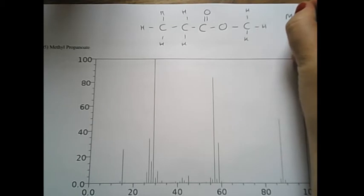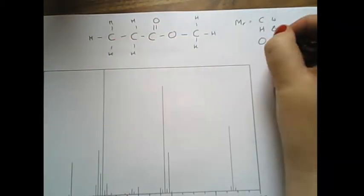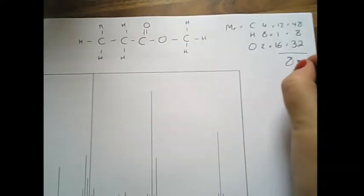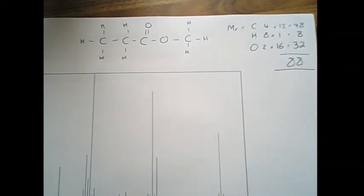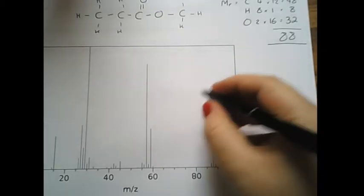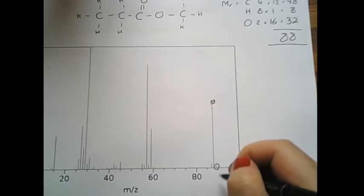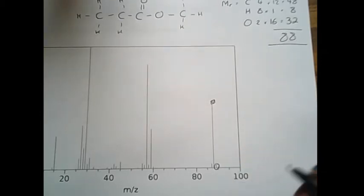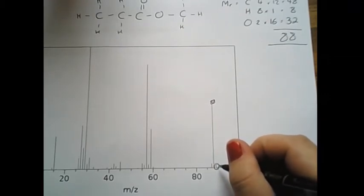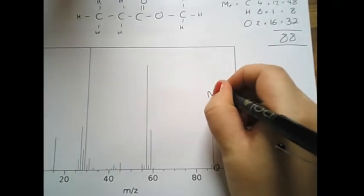The overall relative formula mass for that one is a bit of a beast. Total's going to be 88. So let's match up to our spectra. Yep. That one looks like the 88, the big one there. Again, without sort of further degrees of precision, we can't tell if that is 88 or if that is the sort of isotope one for the 89. So I'm just going to call this one the molecular ion peak for now.